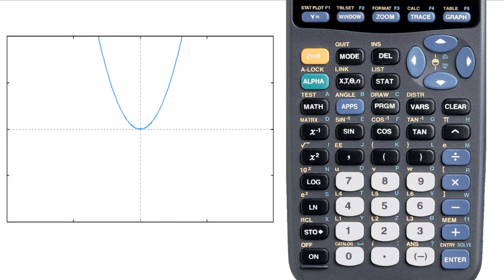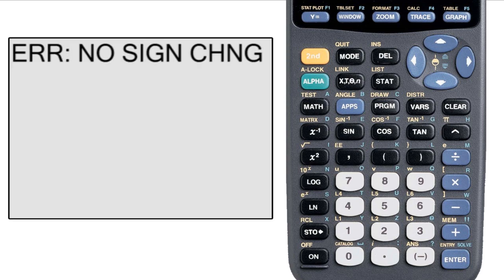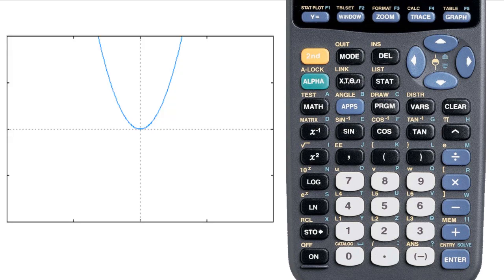Now let's try to find the zero of x squared. We're going to see that there's a problem. Select left bound, right bound, and it returns error, no sign change. When it solves for zeros, it expects the function to cross the x axis at some point. So it looks for where the sign changes to try to pinpoint the zero. The problem with this for functions like x squared, it touches the x axis, but it doesn't cross it.